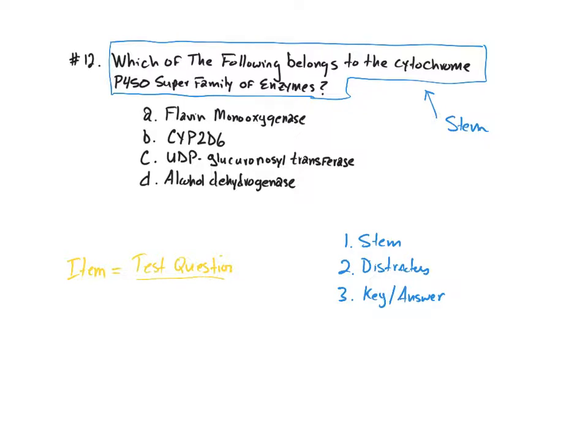And then we have what are known as the distractors. The distractors are potential answers, but they are incorrect. In this particular question, flavin monoxygenase, UDP glucuronylsulfotransferase, and alcohol dehydrogenase (or ADH) are all distractors. They are incorrect answers.